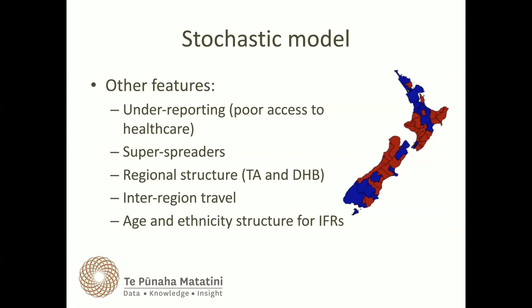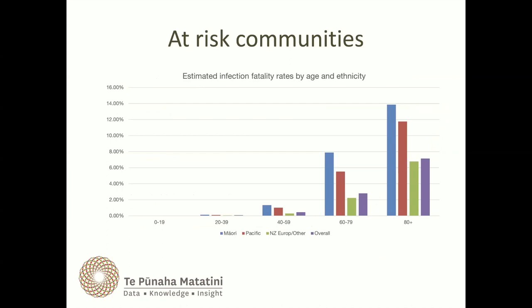Other features of the model include under-reporting — this is where parts of the country or people in different ethnicities or socioeconomic conditions might have poor access to healthcare and be less likely to get a test or go to their GP. We have super-spreading events, reflecting some of what we've seen in clusters. We've got regional structure with inter-regional travel. We now also have age and ethnicity structure for the infection fatality ratios. In particular, Māori and Pacific people have much higher risks of fatality. You can look at this via life expectancy and adjust on that basis, or look at co-morbidities — other conditions that impact survival chances.